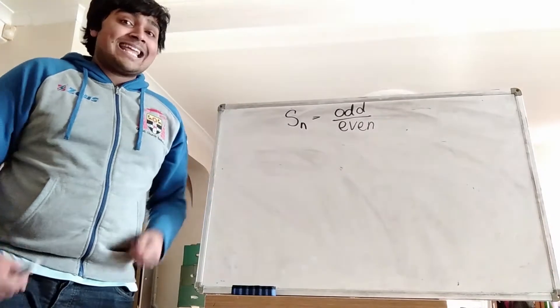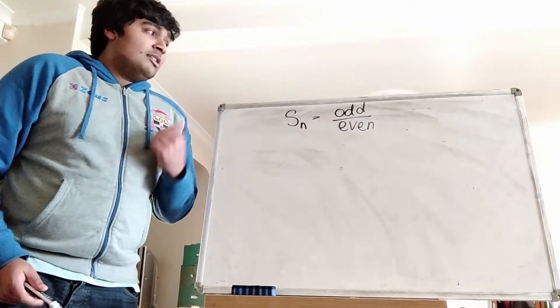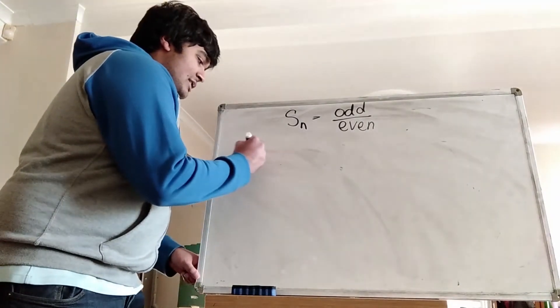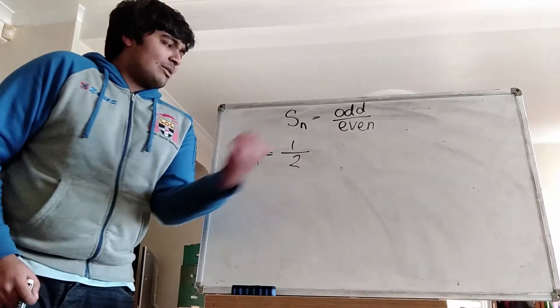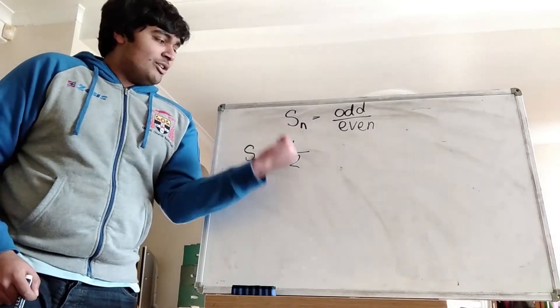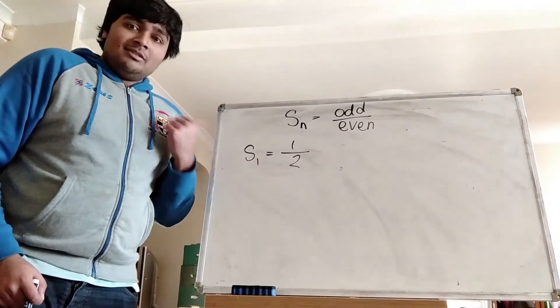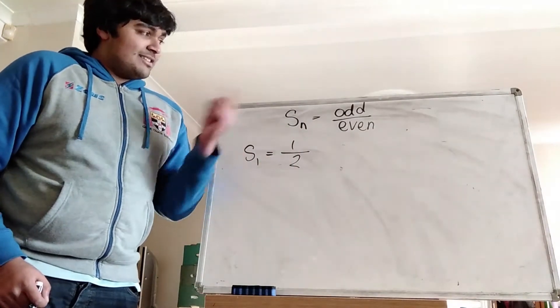But of course I've got to prove this, and the way we're going to do that is by induction. So let's firstly look at S1, which is just precisely 1 over the first prime number, so that's 1 over 2. Now clearly this has the form odd over even, so 1 over 2. So S1 is of the desired form.